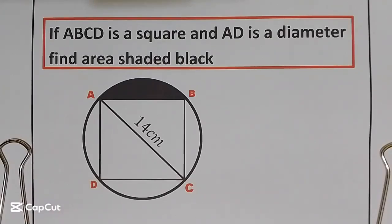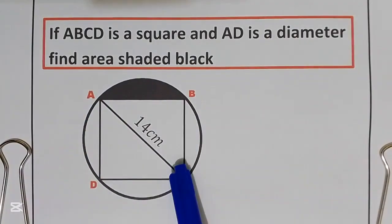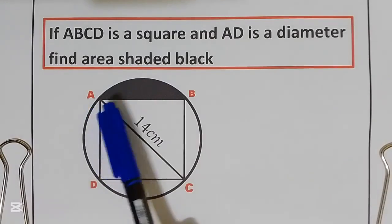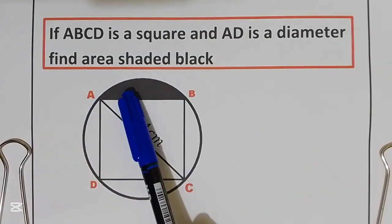Hello, welcome back to the channel. We are supposed to find the area of the shaded part. They have given to us a square inscribed in a circle. We need to find the area painted black.